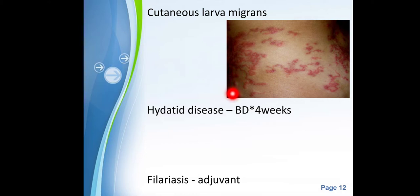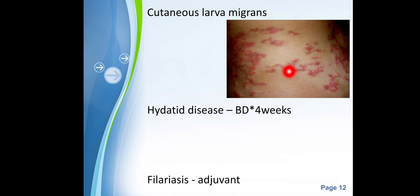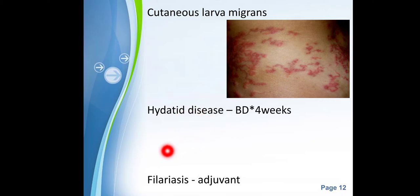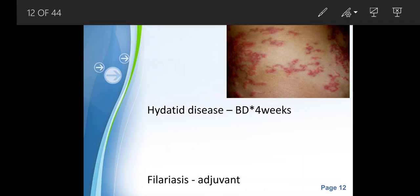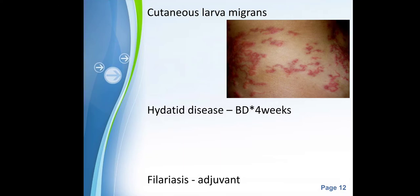In cutaneous larva migrans, larvae migrate beneath the skin, causing visible skin lesions. For hydatid disease, albendazole is given twice daily for 4 weeks. In filariasis, albendazole can be used as an adjuvant, but the main drug of choice is diethylcarbamazine (DEC), which will be discussed separately.